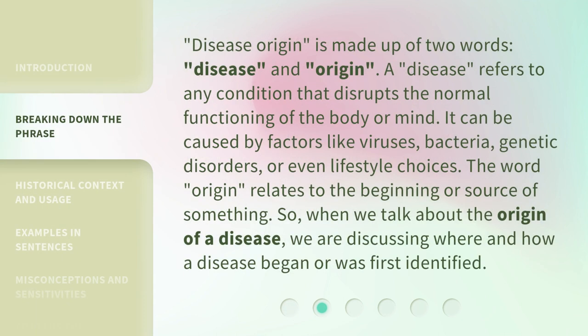Disease origin is made up of two words: disease and origin. A disease refers to any condition that disrupts the normal functioning of the body or mind. It can be caused by factors like viruses, bacteria, genetic disorders, or even lifestyle choices. The word origin relates to the beginning or source of something. So, when we talk about the origin of a disease, we are discussing where and how a disease began or was first identified.